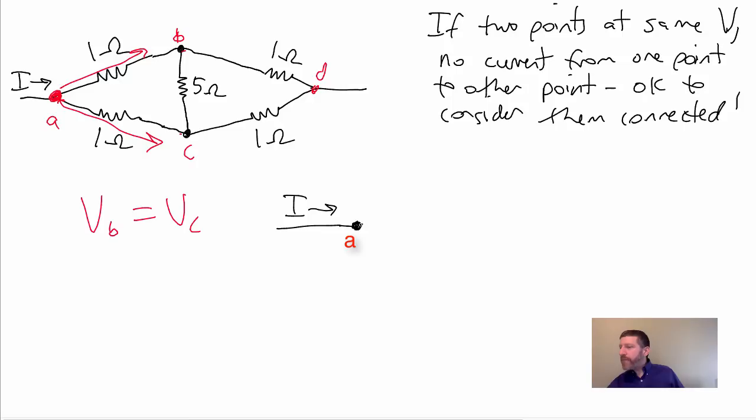Here is my 1-ohm resistor right here. And here's my other 1-ohm resistor right here. These two points, C and B, it's like they're connected. It doesn't even matter. I could put my, that 5-ohm right there. It doesn't even, both ends at the same part.